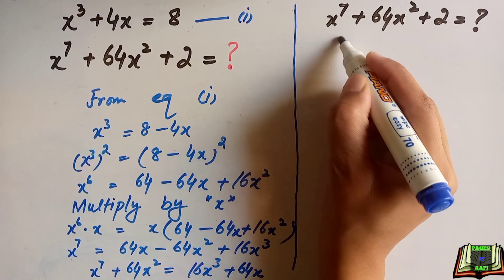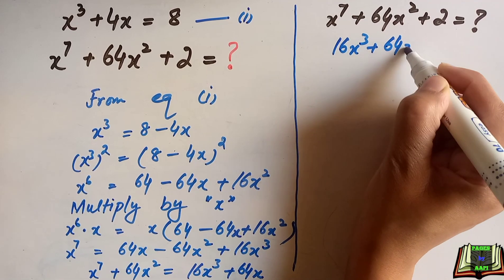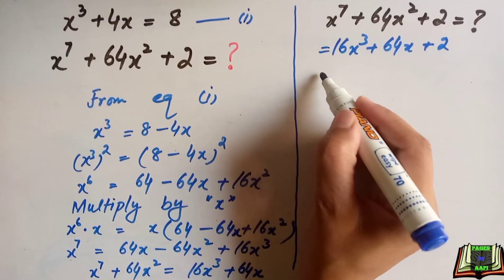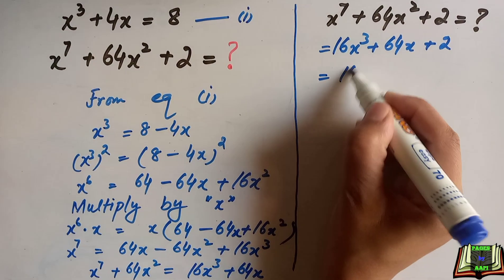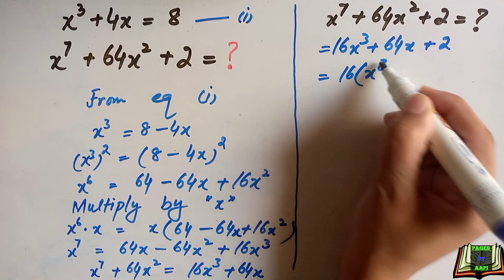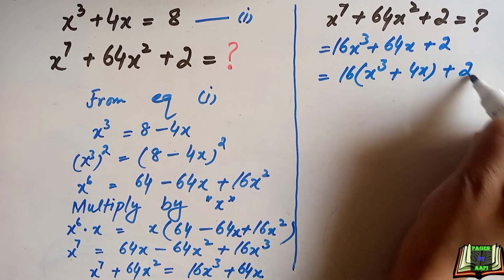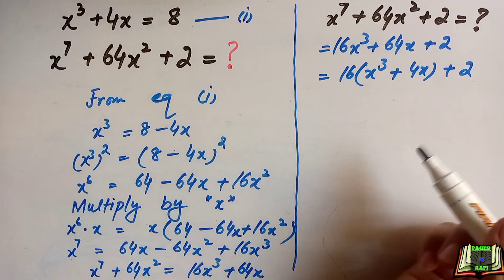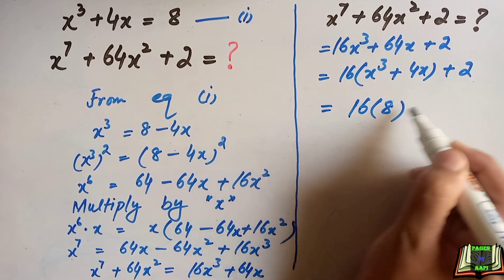So let's write its value. This equals 16x³ + 64x + 2. Here we'll take 16 as common, then we're left with 16(x³ + 4x) + 2. We know the value of x³ + 4x equals 8, so we're going to substitute its value.